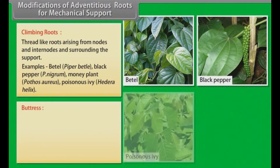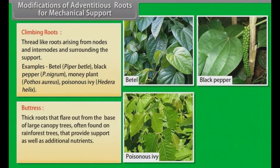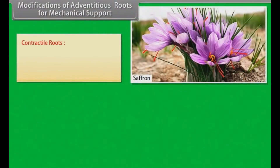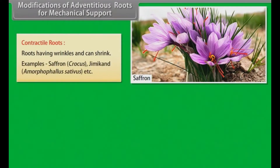Buttress: Thick roots that flare out from the base of large canopy trees, often found on rainforest trees, that provide support as well as additional nutrients. Examples: Salmalia, old banyan tree, etc. Contractile roots: Roots having wrinkles that can shrink. Examples: saffron, Crocus, etc.